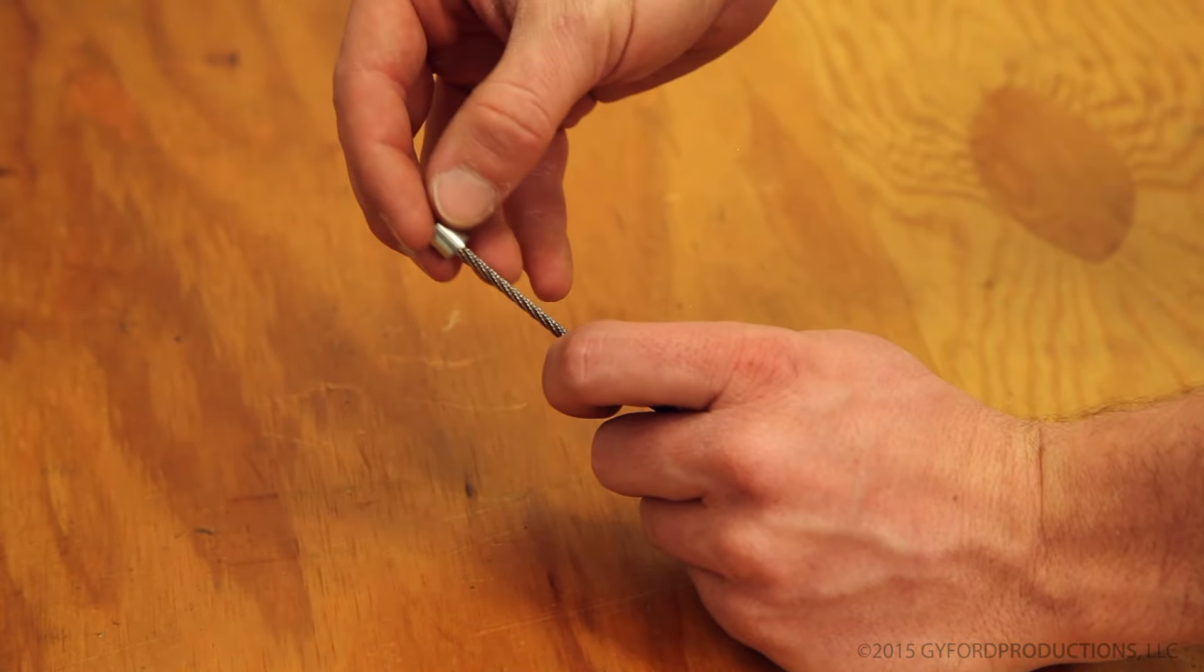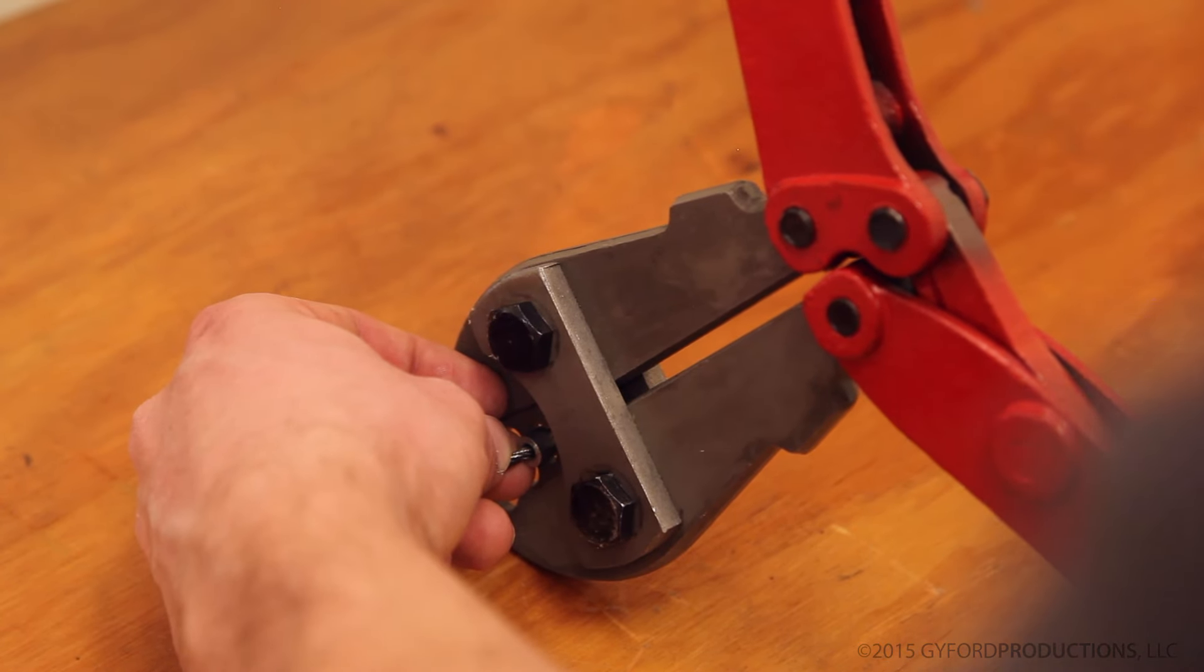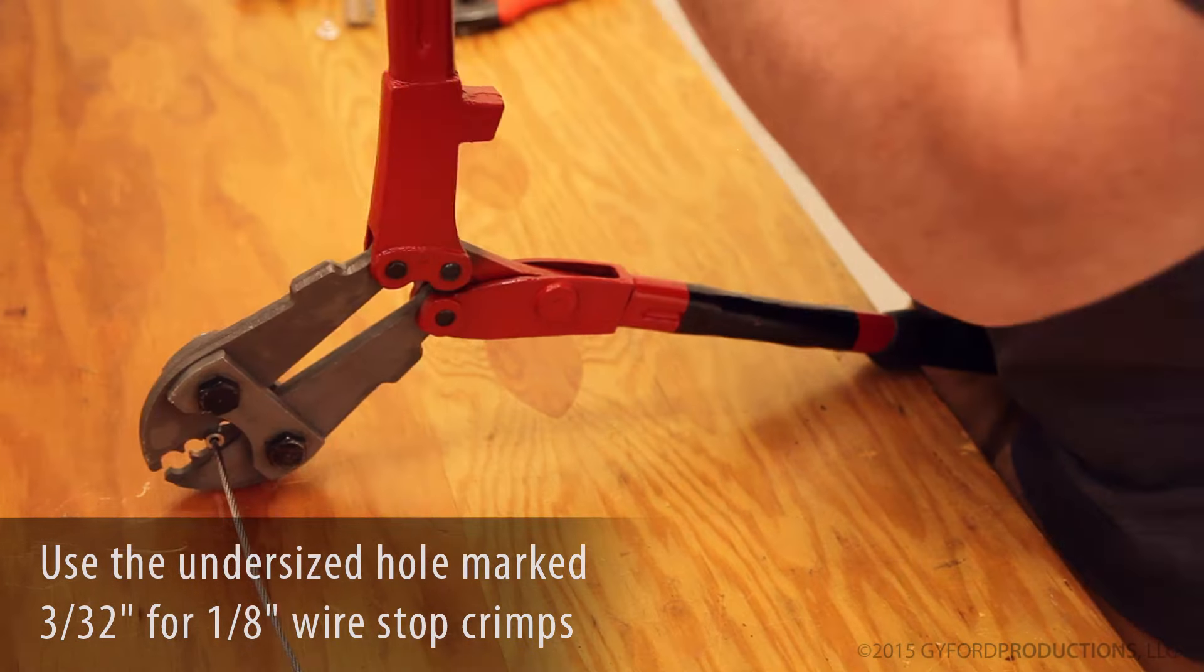The second type of swage is done manually, usually as a field installation. Find the correct hole on the head of the crimping tool for the wire you're using.